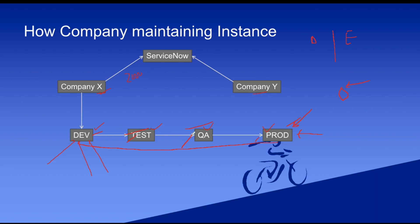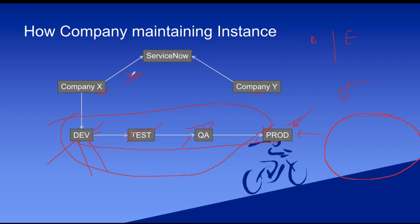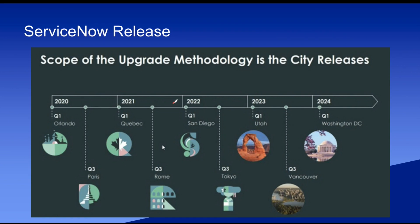This is how ServiceNow instances work — they're connected and you can move artifacts from Dev to Test, Test to QA, and QA to Prod. Company X and Company Y have similar setups but are completely segregated — you cannot see data from Company X in Company Y. Each company has its own Dev, Test, QA, and Production environment.